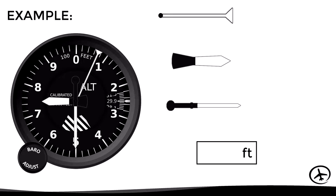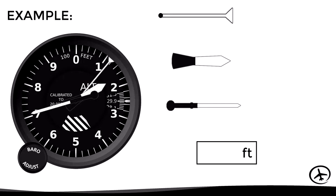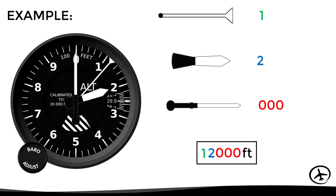In another situation, the triangular needle is between zero and one, the short needle is between seven and eight, and the long needle points number five — so the altimeter reads 7,500 feet. In a final situation, the triangular needle is between one and two indicating above 10,000 feet, the short needle points number two indicating 2,000 feet, and the long needle points zero — giving a reading of 12,000 feet.